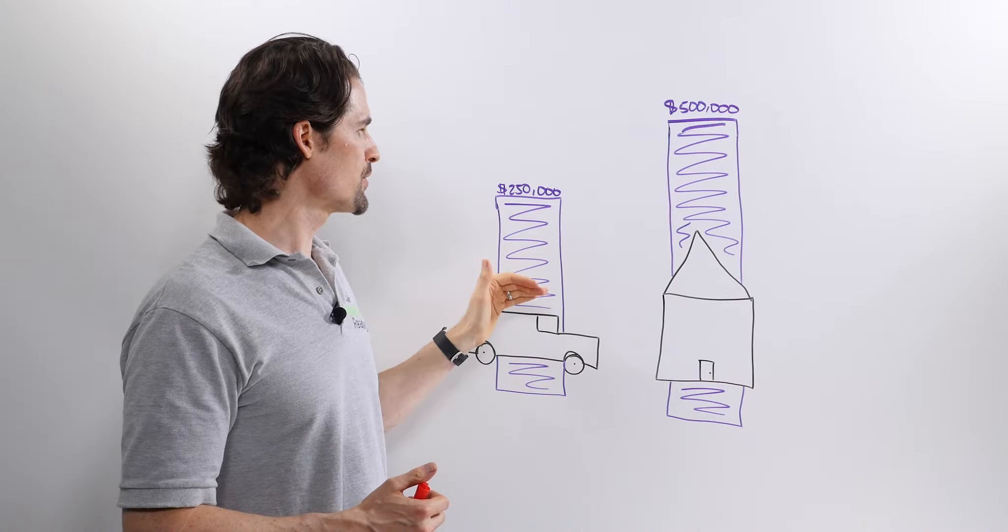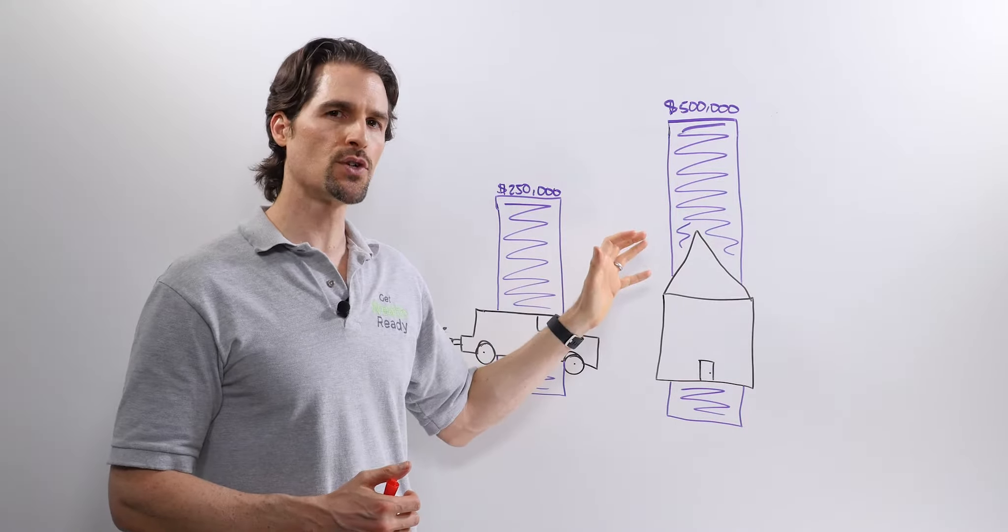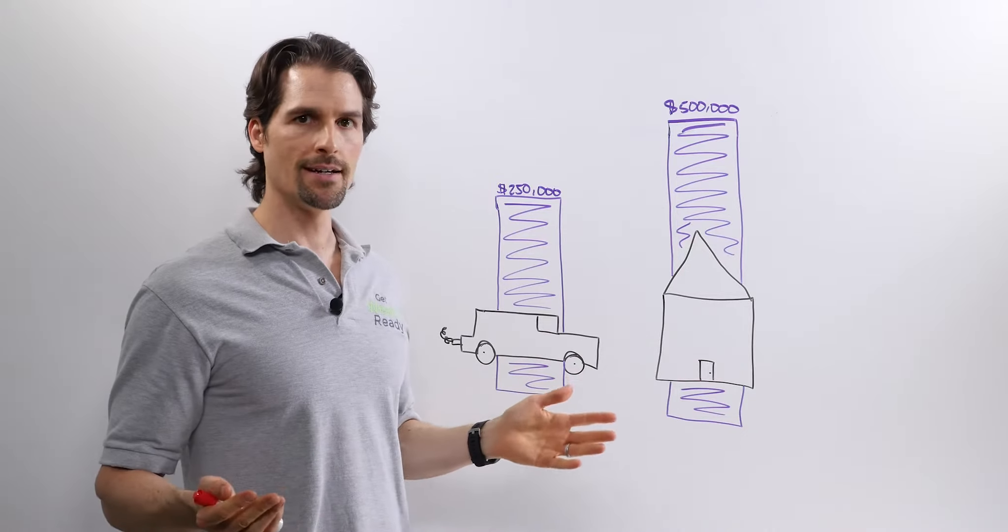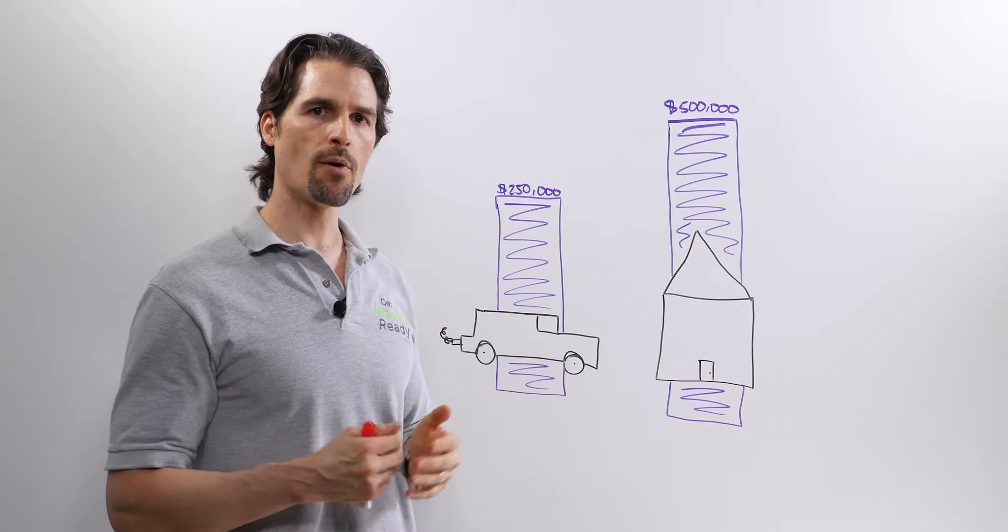In this example, it's $250,000 on your auto, $500,000 on your homeowner policy. But again, what happens if you get sued for more than that?